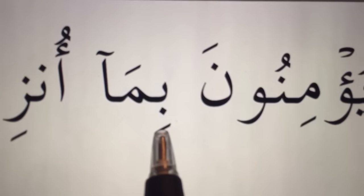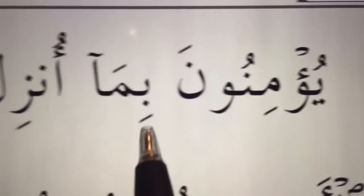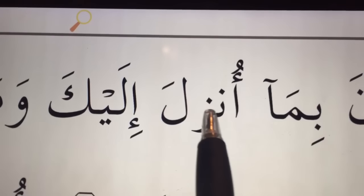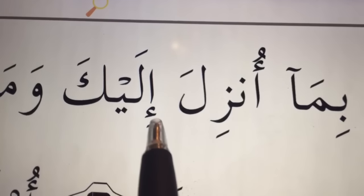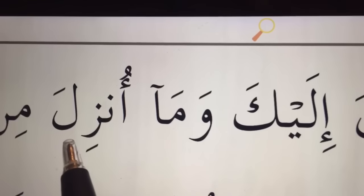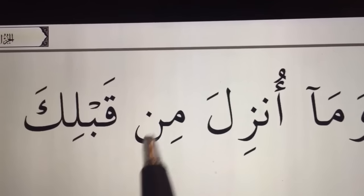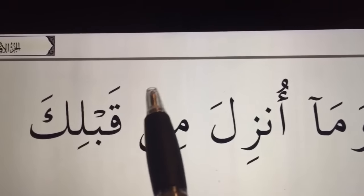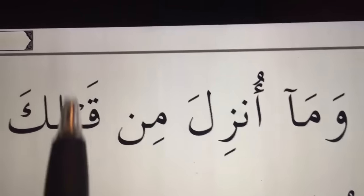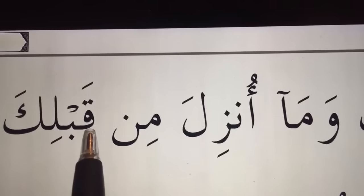Wa al-lazina yu'minuna bima unzila ilayka, wa ma unzila min qablikah. This is noon sakinah — a noon with a sukoon on top. This font I'm using often doesn't write the sukoon, but it's assumed. If it doesn't have a movement, it's a sukoon. Min qablikah.